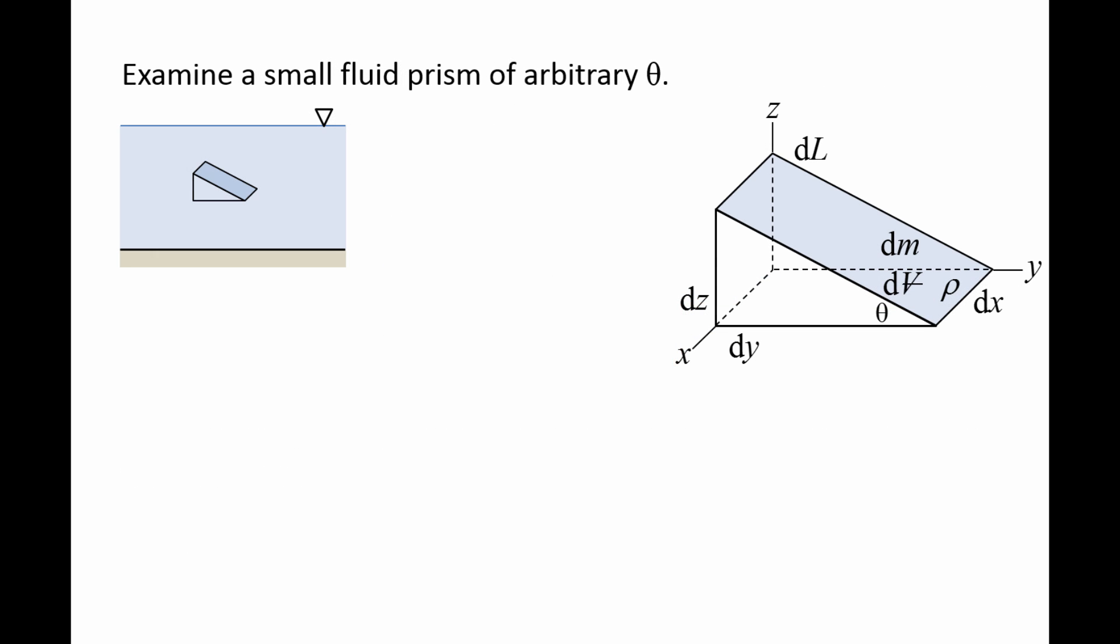We start by examining the forces on a small triangular prism of fluid of arbitrary angle theta. The dimensions of the prism are dy by dz by dl. The prism has a mass dm and a volume dv, and we will assume the density is a uniform value of rho throughout the prism.